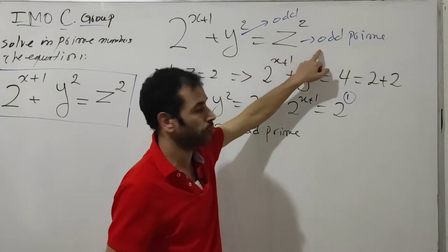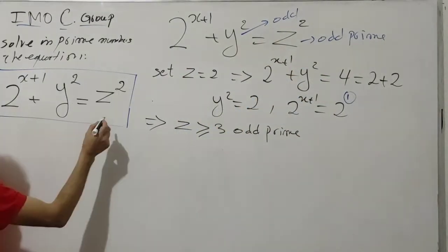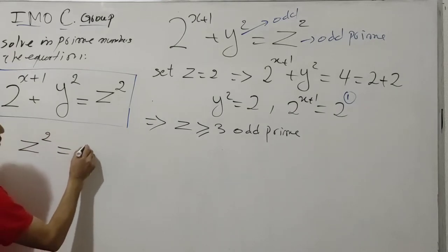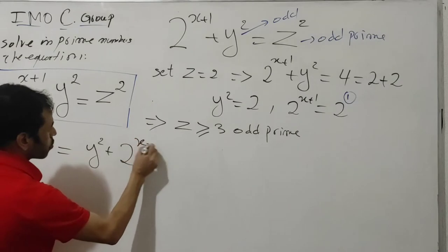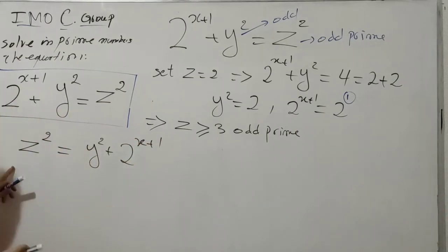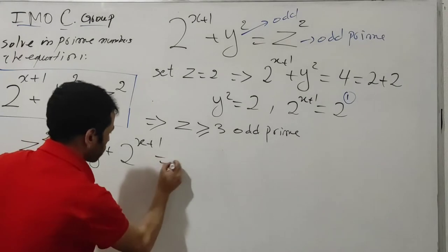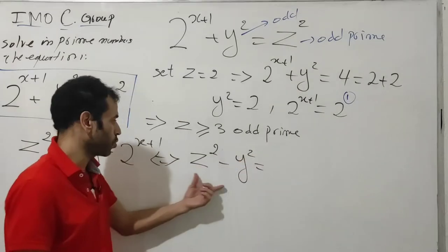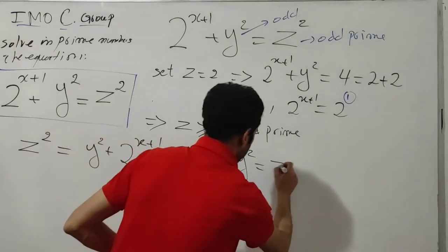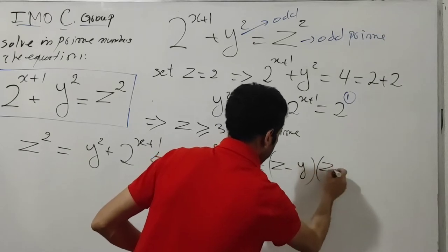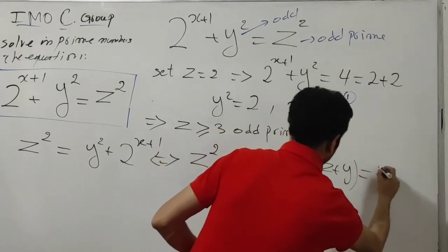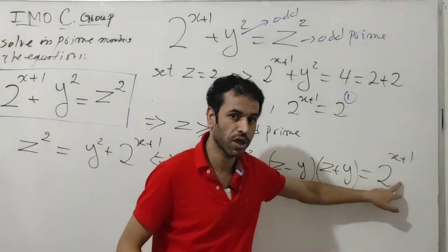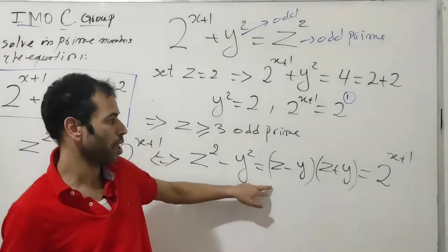Now we know y and z are odd primes. Let's move on to solve the equation. We have z² = y² + 2^(x+1). Taking y² to the left-hand side gives z² - y² = 2^(x+1), which factors as (z - y)(z + y) = 2^(x+1). Since the right-hand side is a power of two, the left-hand side must also be a power of two.